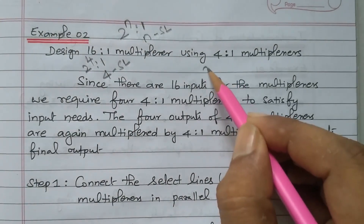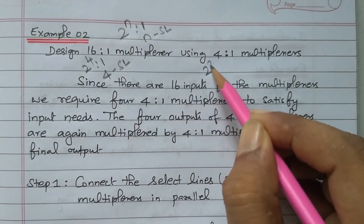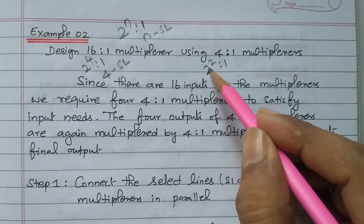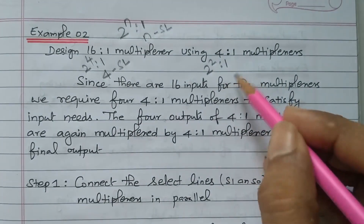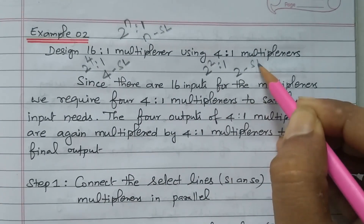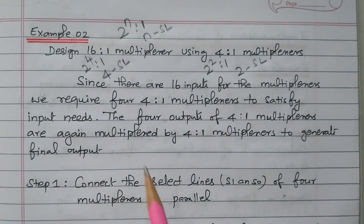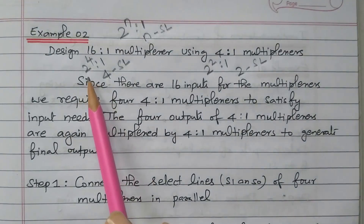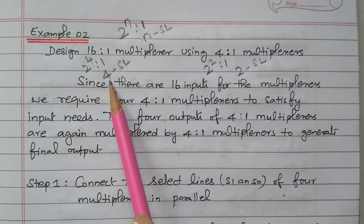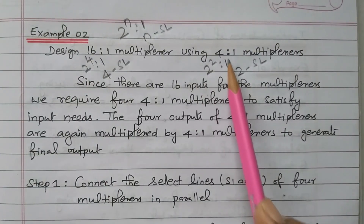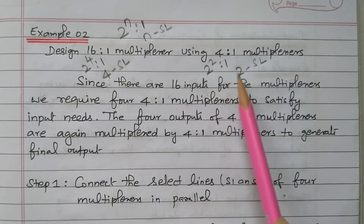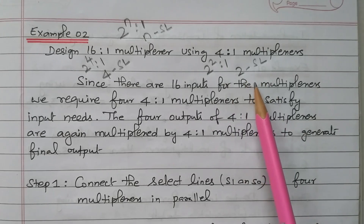The 4-to-1 multiplexer means it is 2 to the power 2-to-1 — that is 4 inputs and 1 output, with 2 selection lines available.